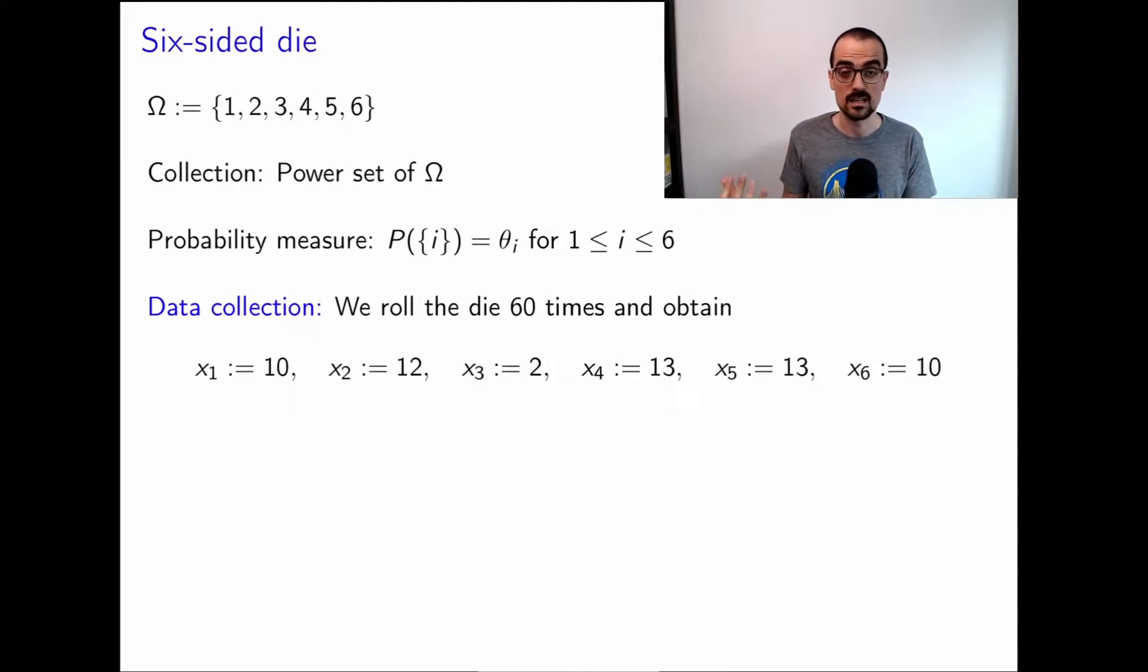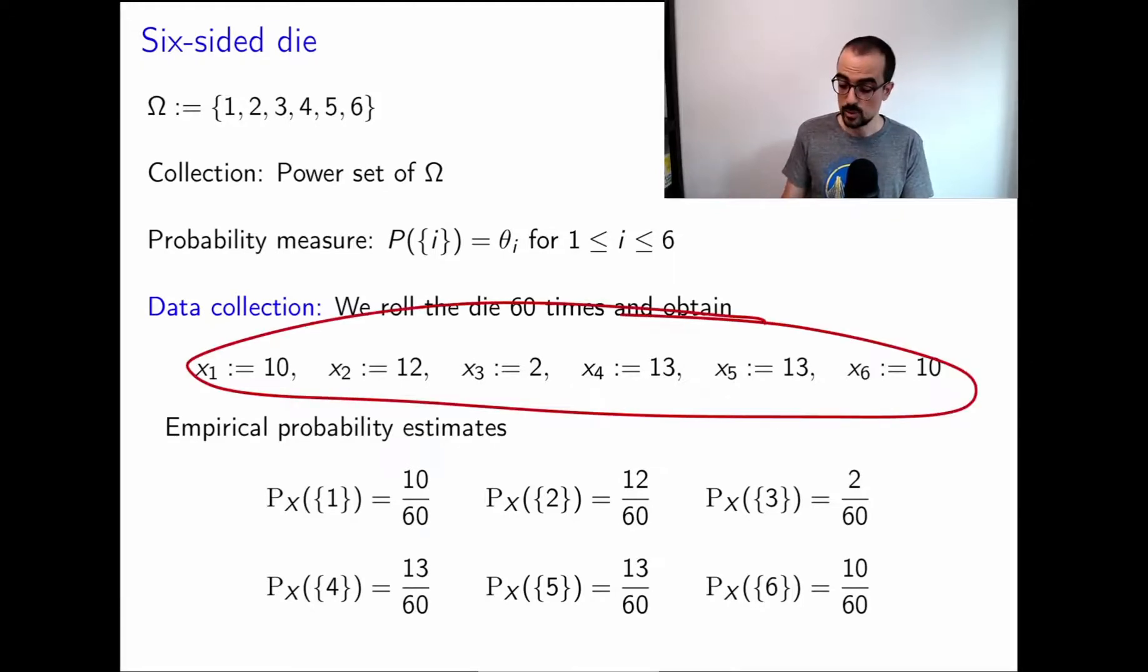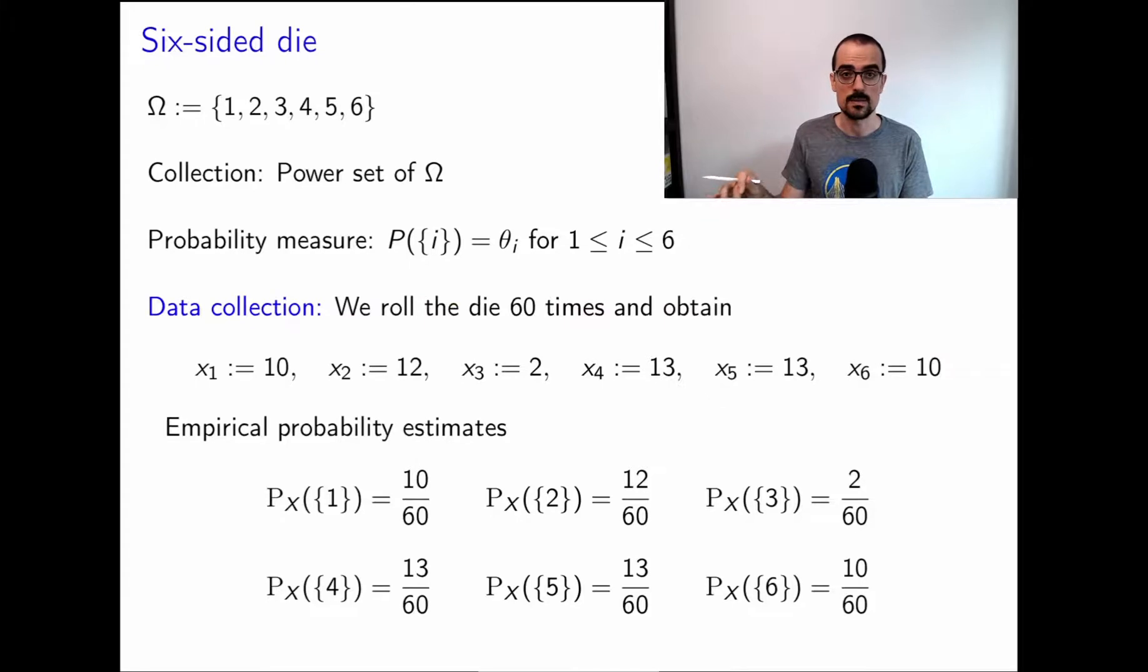So now we apply empirical probability to estimate the probability measure. We just divide all of these numbers by the total number of rolls, and because all of these guys add up to the total number of rolls, we do get a valid probability measure. All the numbers are non-negative. They add up to 1. So that's empirical probability. This is actually very simple, and it's used all over the place.